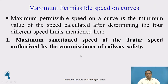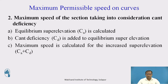We are calculating four different speed limits. The first is based on the sanction speed given for that particular track by the track engineer or chief engineer. The second is based on the actual cant, where we calculate the equilibrium super elevation and add cant efficiency CD to get the maximum speed allowed, considering actual cant and cant efficiency.